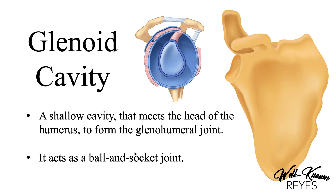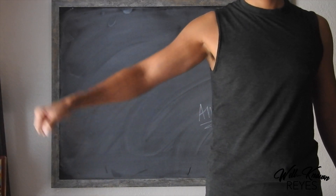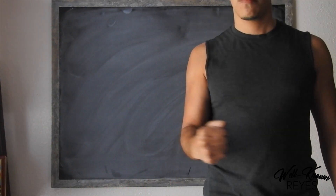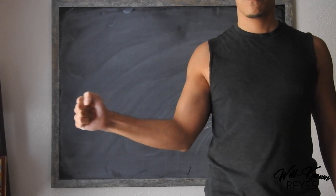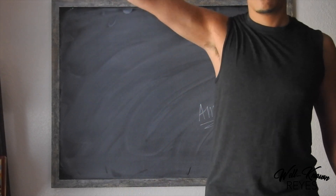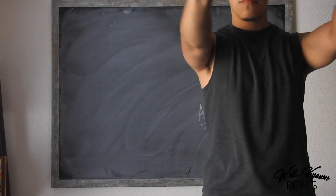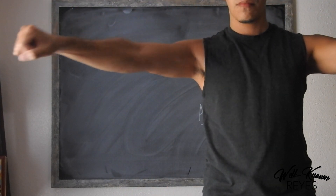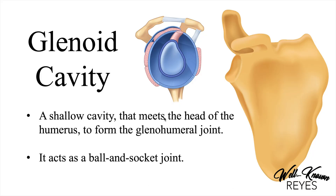It is a ball and socket joint. The ball is the head of the humerus and the socket is the glenoid cavity. The ball and socket joint gives us the greatest amount of movement we can achieve at that joint — abduction, adduction, medial rotation, lateral rotation, flexion, extension, circumduction, horizontal adduction and abduction, all at the glenohumeral joint. Make sure you understand that.